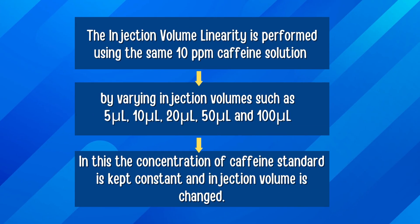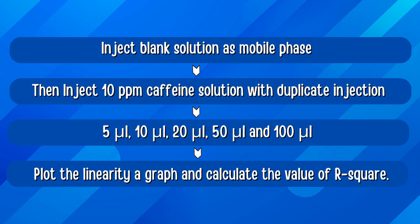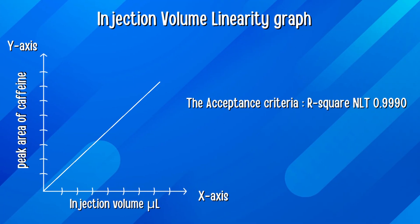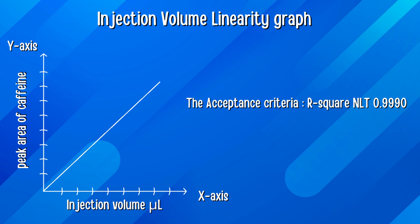The injection volume linearity is performed using the same 10 ppm caffeine solution by varying injection volumes such as 5 µl, 10, 20, 50, and 100 µl. In this, the concentration of caffeine standard is kept constant and injection volume is changed. Set the HPLC system, inject blank solution, and then inject 10 ppm caffeine solution with duplicate injections of 5 µl, 10, 20, 50, and 100 µl, and detector response is measured. From the data obtained, plot the linearity graph of mean area count of duplicate injections on the y-axis against injection volume on the x-axis, and calculate the value of correlation coefficient or R². The acceptance criteria is R² should not be less than 0.9990.